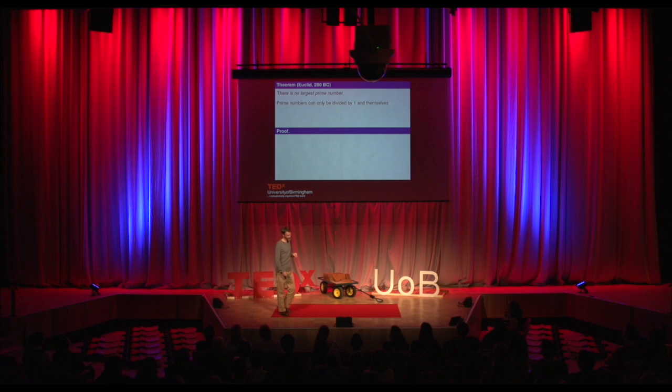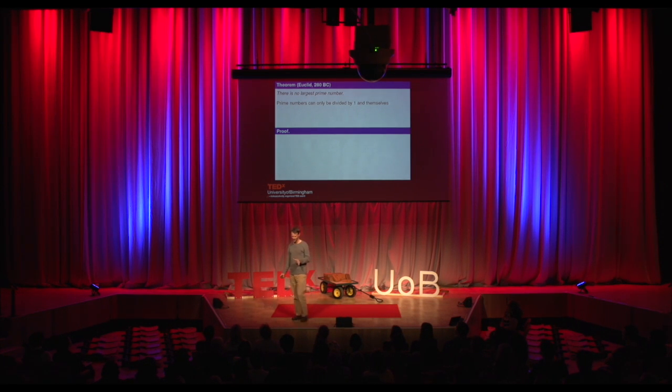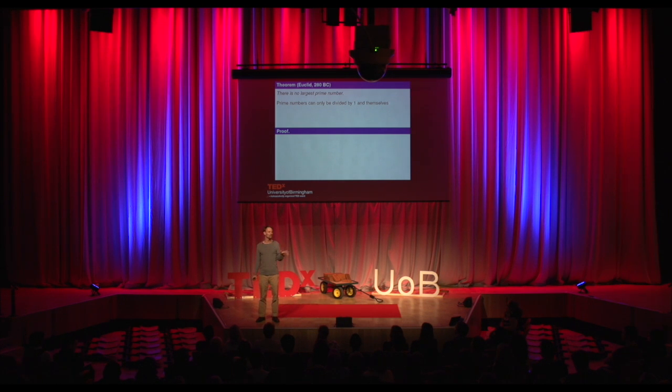I'm still smiling, and I hope by the end of this talk you'll be smiling as well. The first proof we're going to look at is Euclid's proof that there's no largest prime number. This is about 2,300 years old. It's going to take me about 30 seconds to tell you all of the theory you need as background to the proof, and then we're going to walk through the proof. The proof is going to be four steps, and in about two and a half minutes, you're going to understand the proof.